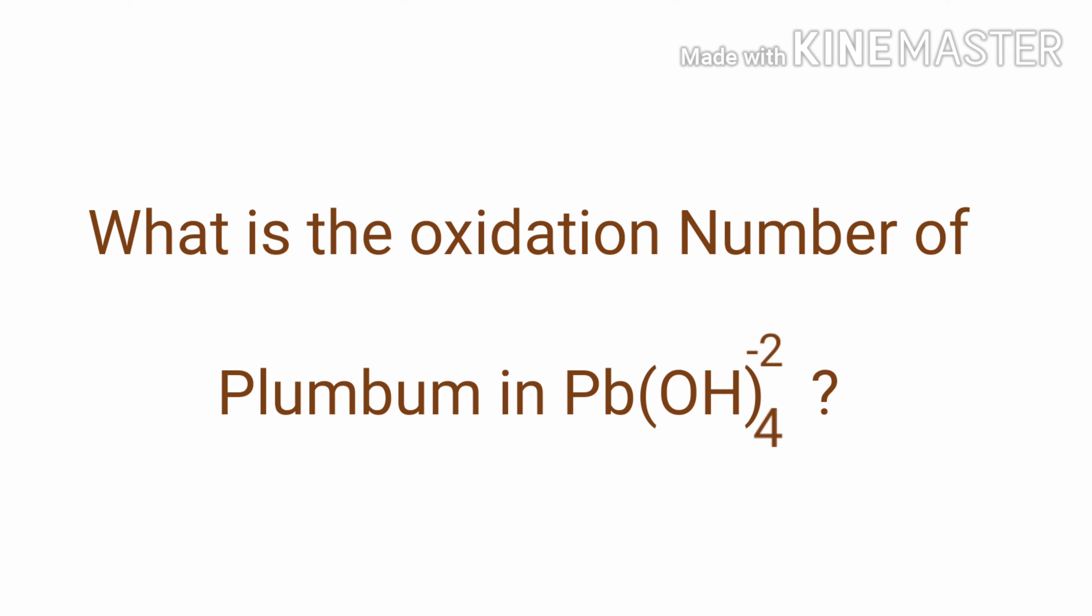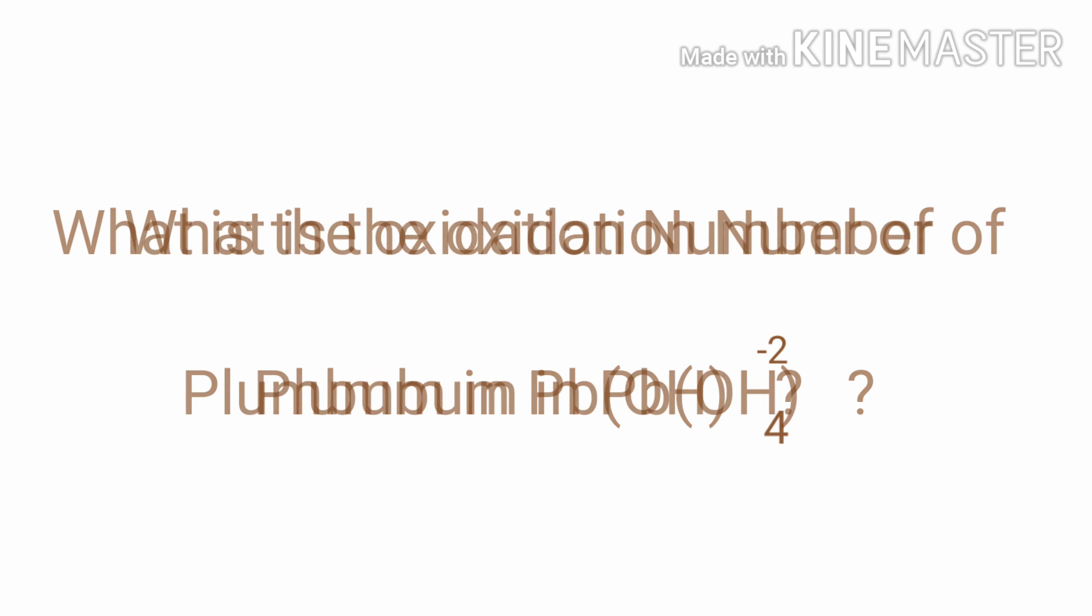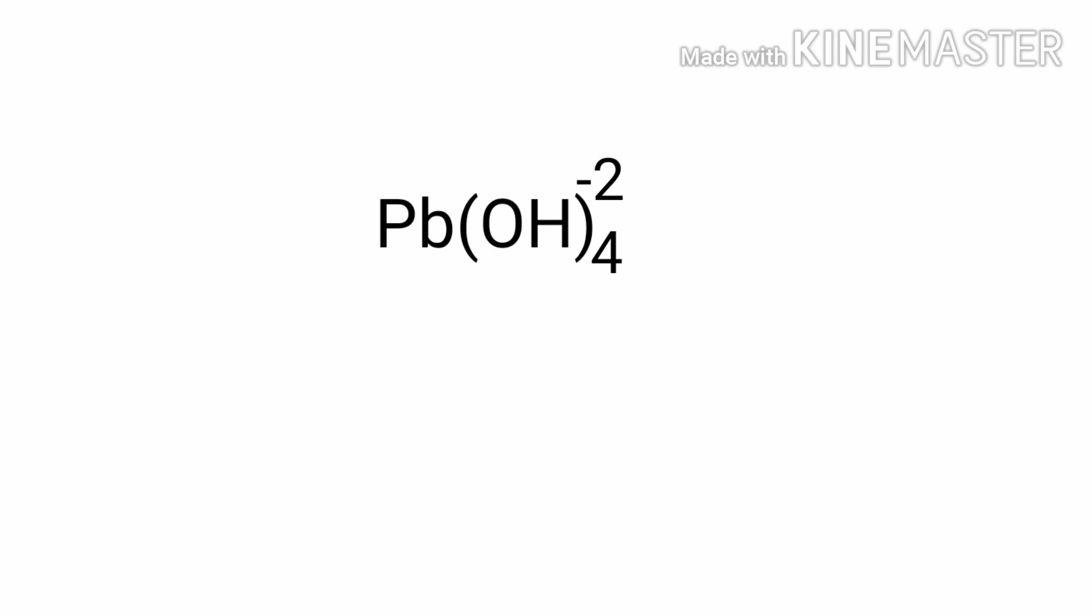What is the oxidation number of plumbum in orthoplumbic acid ion? The orthoplumbic acid ion is an ionic compound with overall oxidation number minus 2. Therefore, we know that the sum of oxidation numbers of the ions is equal to minus 2.